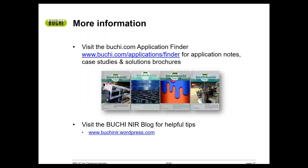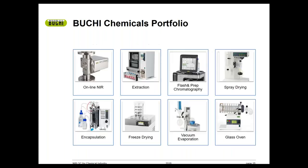For some additional discovery, check out our bookie.com website or application finder for additional application notes, case studies, and solution brochures, or visit our NIR blog for some helpful tips and tricks. Please also note that bookie has a broad portfolio of laboratory products that go into the chemical industry, ranging from our well-known evaporation solutions to flash chromatography and particle engineering technologies such as spray drying, freeze drying, and encapsulation.